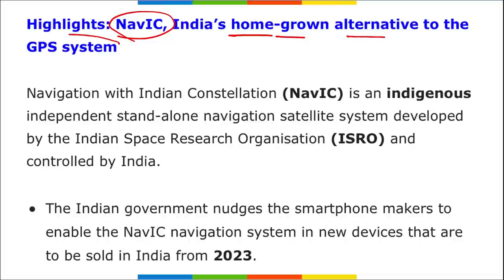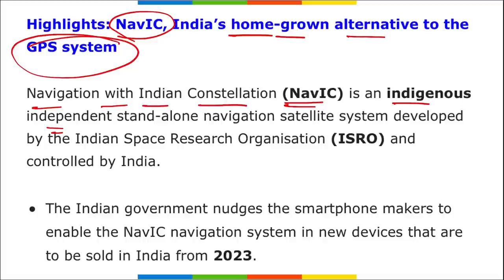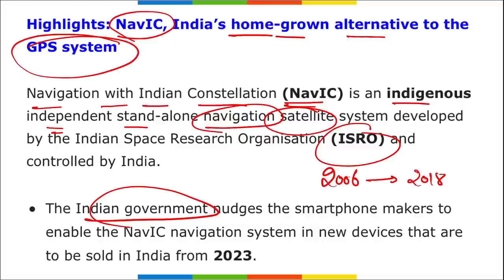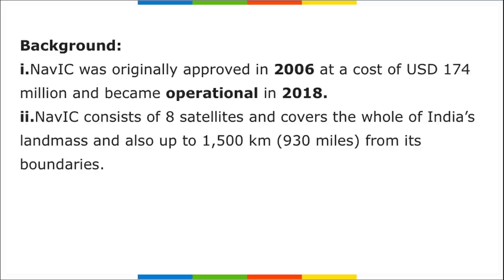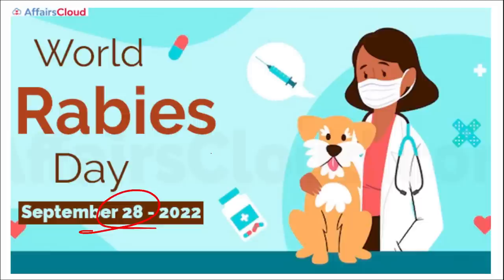NavIC — Navigation with Indian Constellation — is India's homegrown alternative to GPS, an indigenous standalone navigation satellite system developed by ISRO. The project was launched in 2006 and completed in 2018. The Indian government has stated that smartphone makers must enable NavIC navigation in new devices sold in India from 2023 onwards.